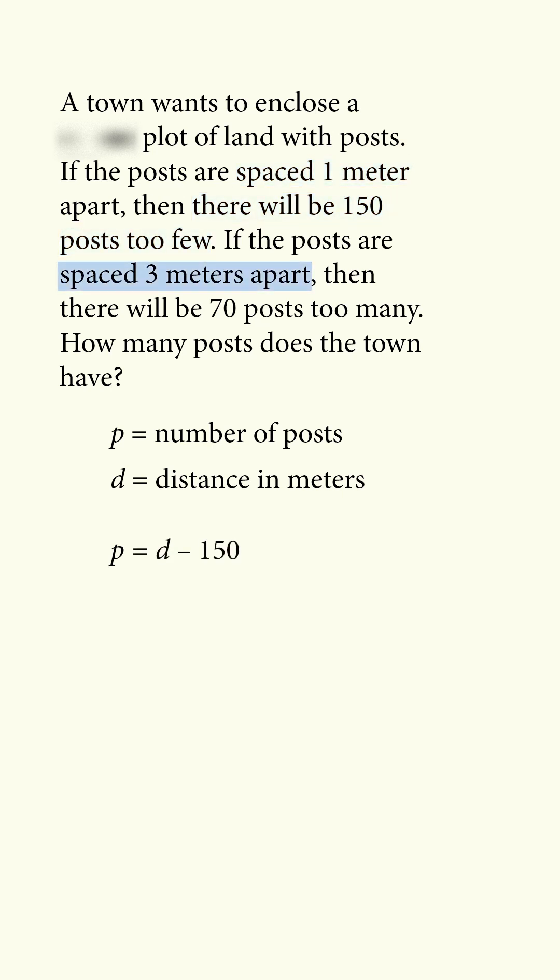If instead the posts are spaced 3 meters apart, the distance will be 3p, then there will be 70 posts too many, so that will be d plus 70 times 3, because the posts are spaced 3 meters apart. That means 3p is equal to d plus 210.